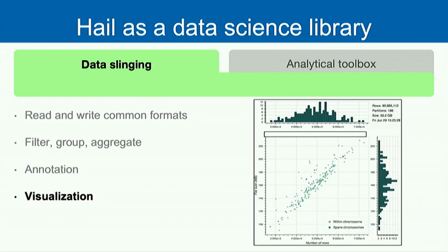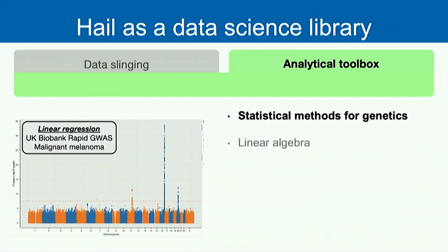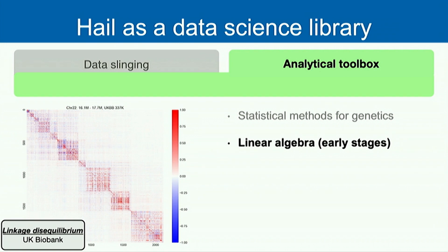Visualization is a major feature — we know in genetics we like looking at pretty pictures. Hail's visualization is a Python-based library using many Python packages. You can also export your data to R if you prefer. For analytics, we have statistical methods for genetics such as PCA and relatedness, available as functions in the Hail library. Linear algebra is in early development but coming soon.